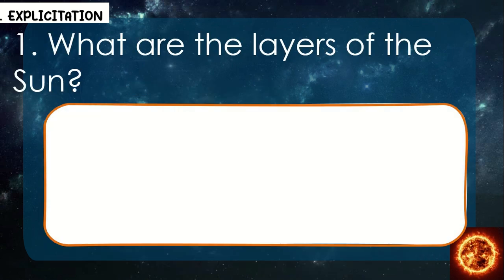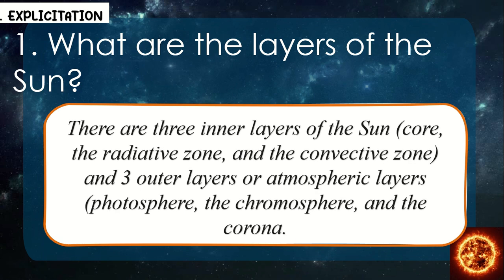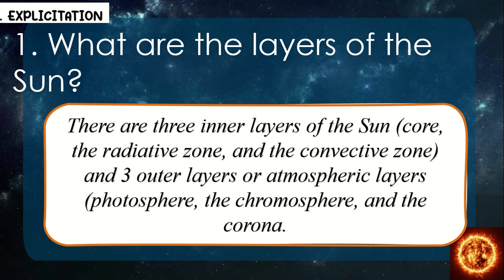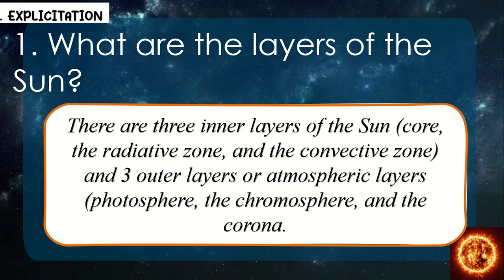What are the layers of the sun? There are three inner layers of the sun: the core, the radiative zone, and the convective zone. And three outer layers, or atmospheric layers: the photosphere, the chromosphere, and the corona.